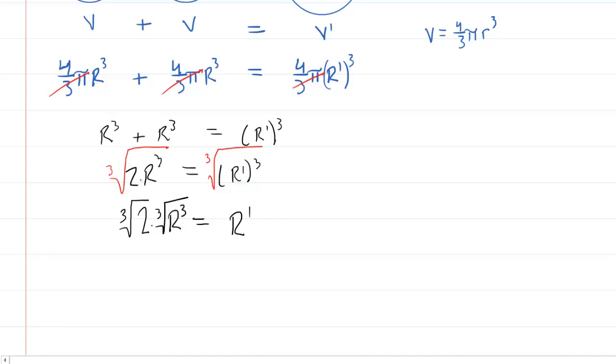In other words, when you have a product and you're cube rooting it, you can take the cube root of each part of the product. The cube root of 2 is just going to stay as the cube root of 2, but the cube root of r³ is just capital R. So, this would be the final expression we would have for r prime, which is the radius of the larger sphere once the two individual drops merge together.